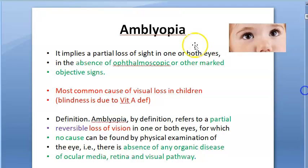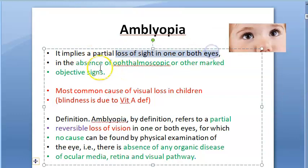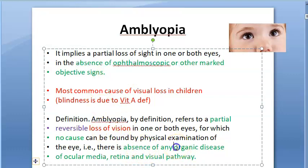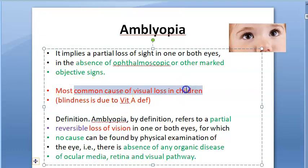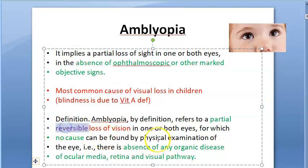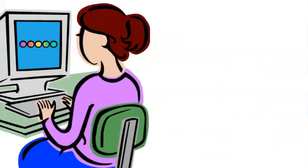The definition: there is loss of sight in one or both eyes in the absence of any ophthalmoscopic or marked objective signs. There is no organic disease in the ocular media, retina, or visual pathway. This is a very common cause of vision loss in children — not actual blindness, but visual loss — and it is reversible up to some years.